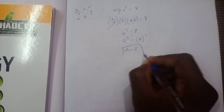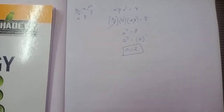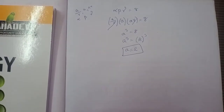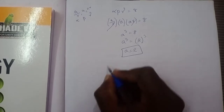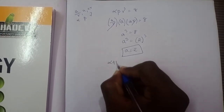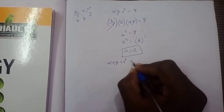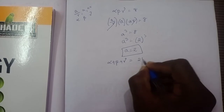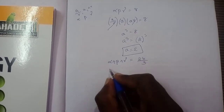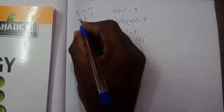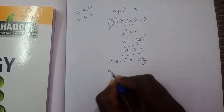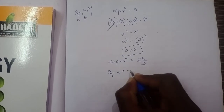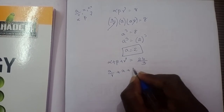So a = 2. Now using α + β + γ = 26/3, substituting the roots a/r, a, ar: a/r + a + ar = 26/3.